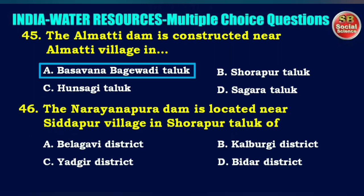The Narayana Pura Dam is located near Siddhapur village in Shorapur Taluk of — options are Belagavi district, Kalaburgi district, Yadgir district, or Bidar district. The right answer is option C: Yadgir district.